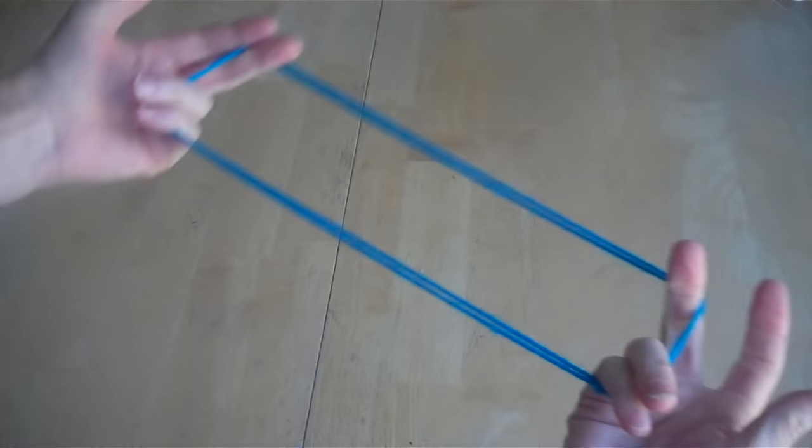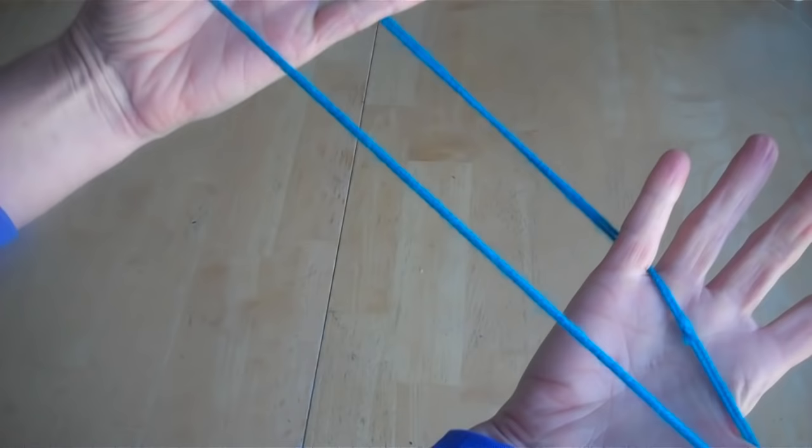For this figure though you need it to be a lot shorter so I'm just going to loop it over itself and give myself a smaller circle to work with. So just pretend that this is like one string now when you're doing this.